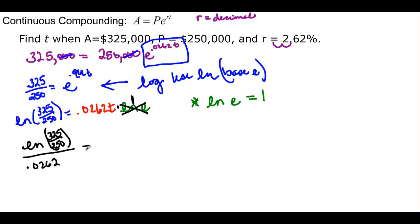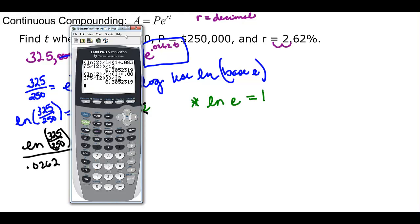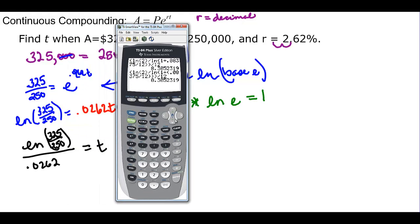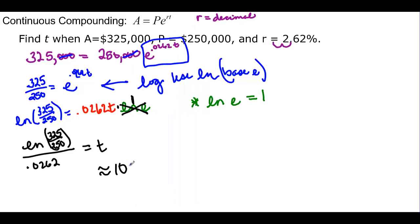Call up the calculator. We're going to clear all this out, and we have the natural log of 325 divided by 250, close the argument, divided by my 0.0262, and we find out that t will take approximately 10 years.